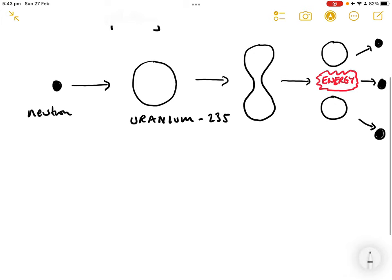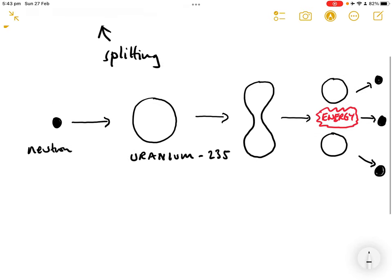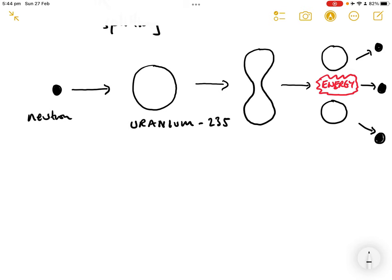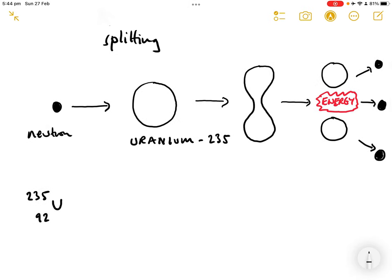What's actually going on here in nuclear terms can be described by a nuclear reaction like this. We have our uranium, which of course is atomic number 92, and the particular isotope of uranium that splits well when the neutron is fired in is uranium-235.